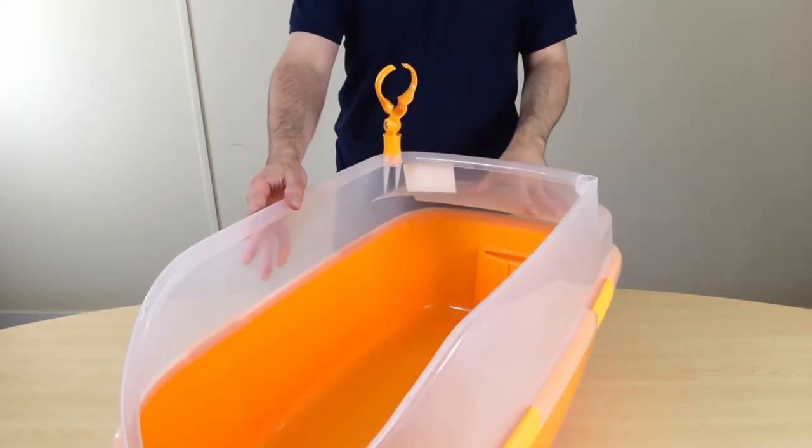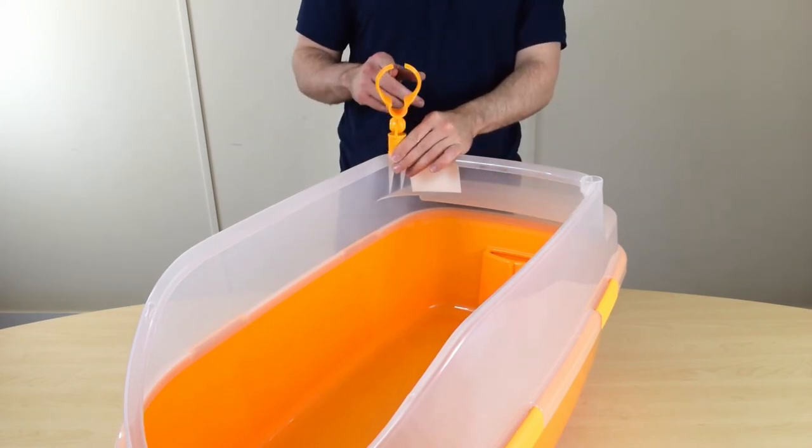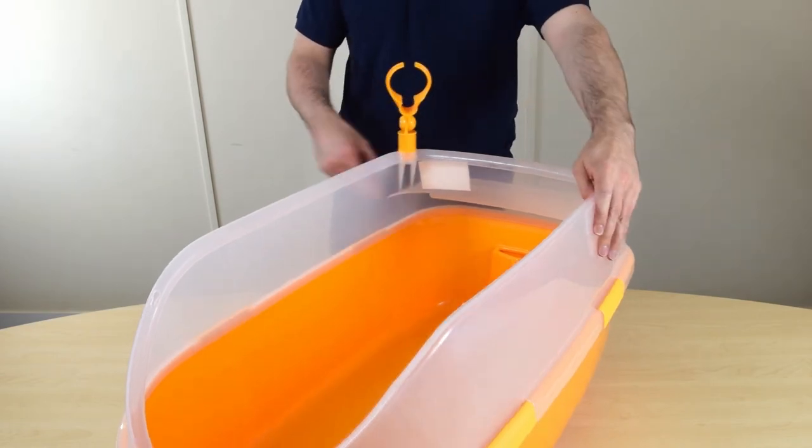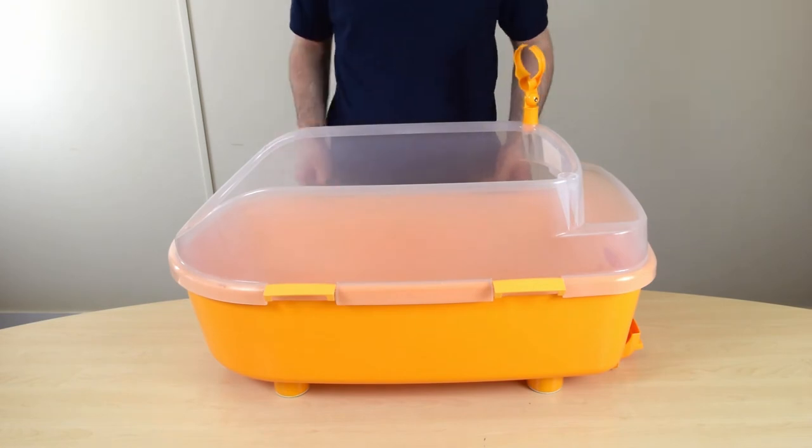Lots of cool features. This claw here can hold either a shower head or a hair dryer. We'll go ahead and take off the splash guard so you can see the other features.